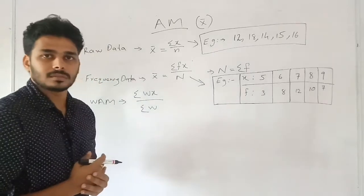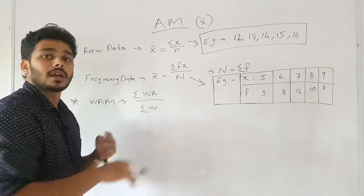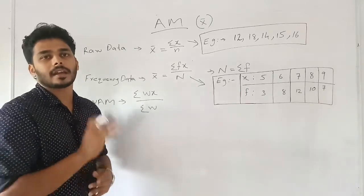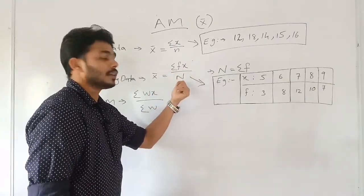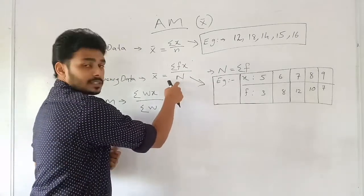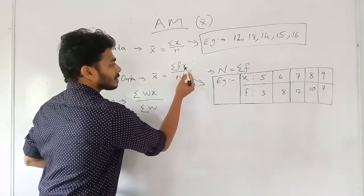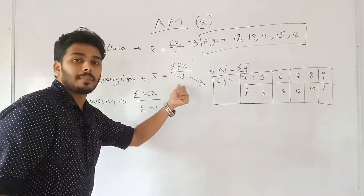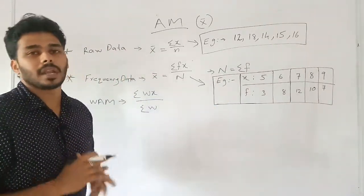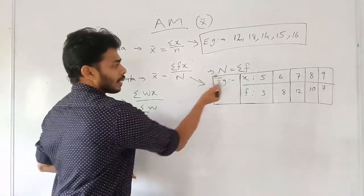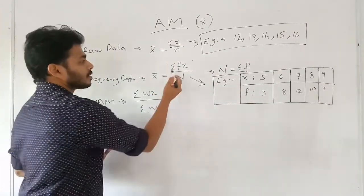The second one is frequency data. The formula is x̄ = Σfx / N, where capital N equals Σf — that is, the sum of frequencies. So the arithmetic mean for frequency data is Σfx divided by N.